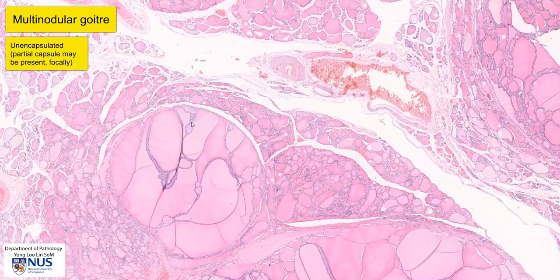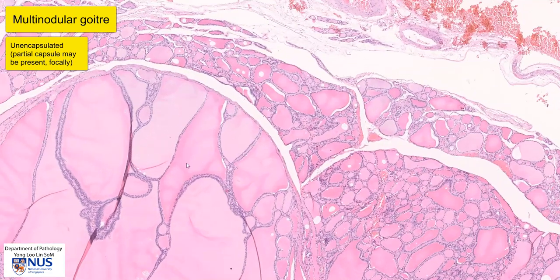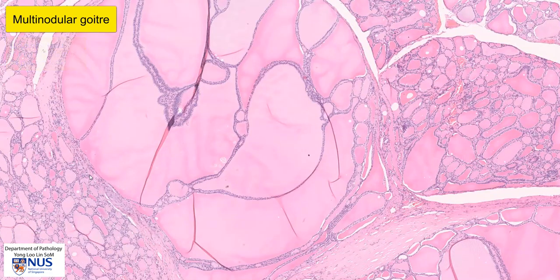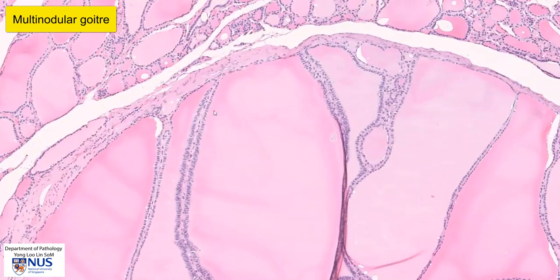As I zoom in, we can see that in most areas the nodules just blend in with the surrounding thyroid parenchyma. This particular nodule has a little bit of an incomplete fibrous capsule, and this is sometimes seen in multinodular goiter.